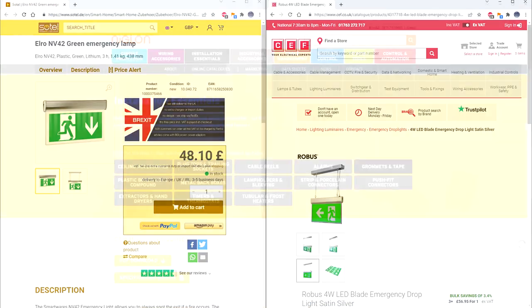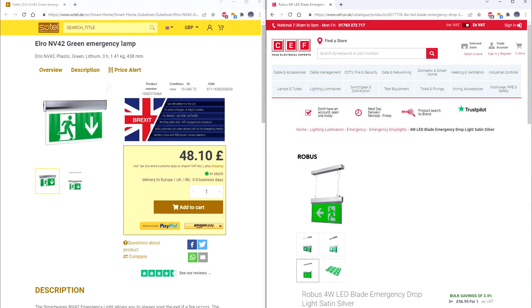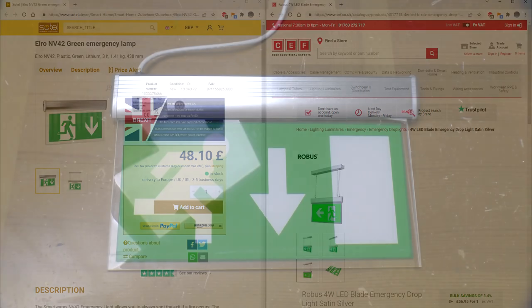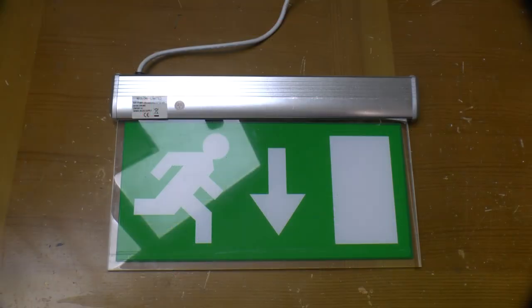In fact, it's closer to an Elro or Robus unit, which are close enough to each other that they probably all come from the same factory. The reason I've got this here is because it appears to be a disposable light fitting. The datasheets give a 3-year warranty and a 4-year battery life. But what then?